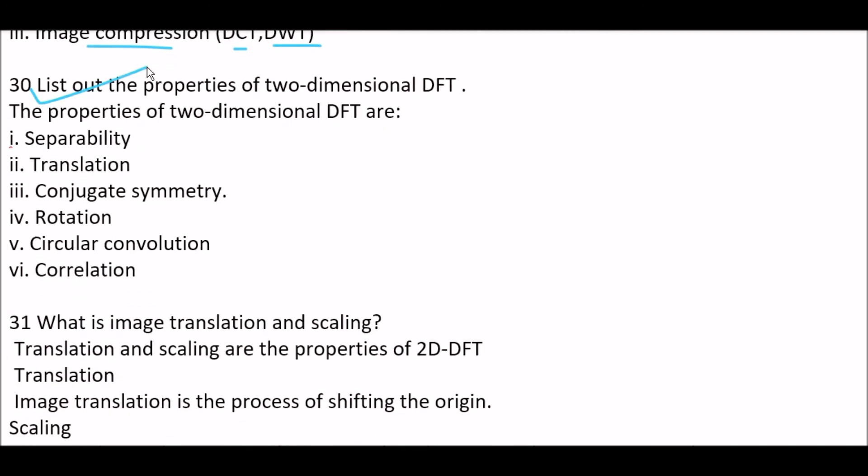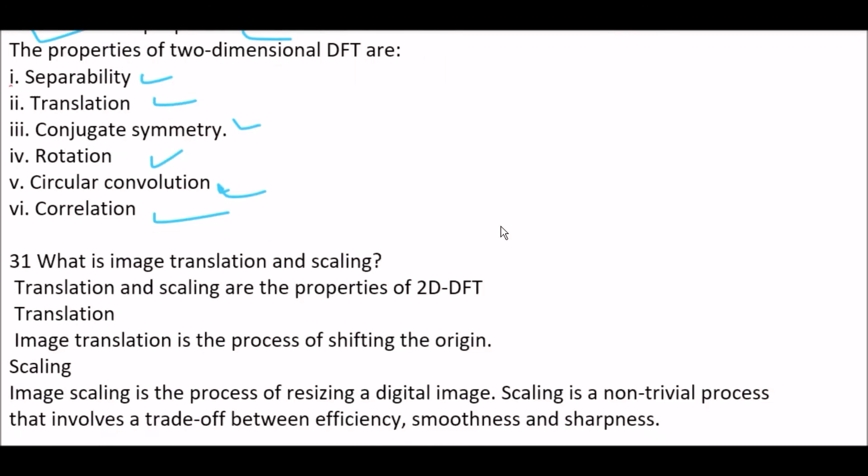Next question. List out the properties of two-dimensional DFT. Answer is, the properties of two-dimensional DFTs are, first one, separability. Next one, translation. Third one, conjugate symmetry. Next one, rotation. Next one, circular convolution. Next one, correlation.